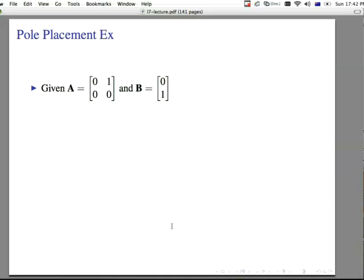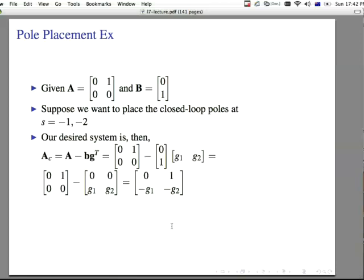Given that a is 0, 0, 0, 1, as shown here, and then B is 0, 1 in the 2 by 2 system, suppose we want to place the closed loop poles at minus 1, minus 2. Our desired system is then, with the closed looped a, what we're looking for, is we want this a minus bg transpose, or 0, 1, 0, 0, minus b, 0, 1, times g. And we don't know what either value of g is. We just know that this vector will be horizontal because of the transpose on it. So then we have g1, g2, as shown here. And multiplying this out and doing the mathematics, we have 0, 1, 0, 0, 0, 1, and then minus g1, minus g2 from the minus sign here.